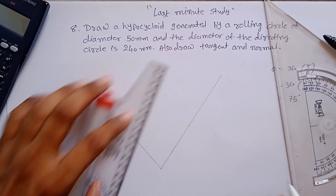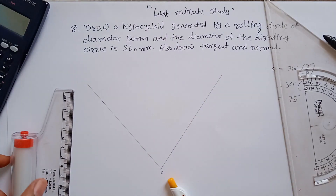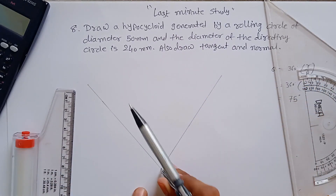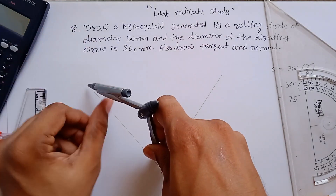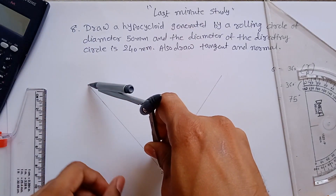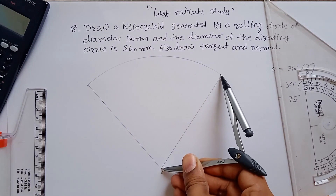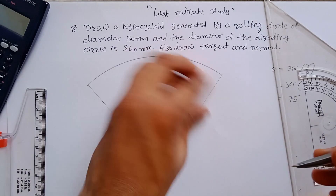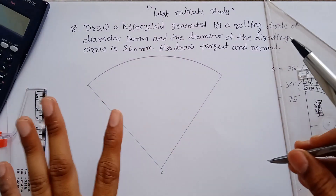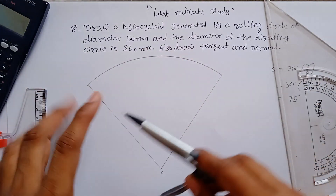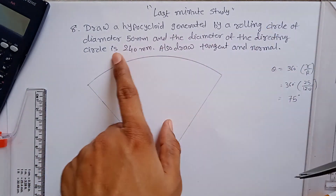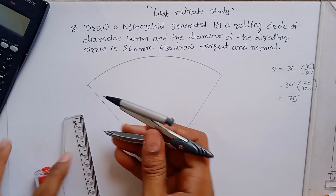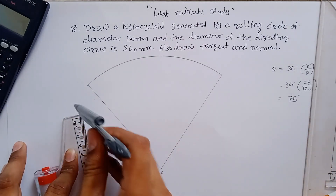This gives you the O point. Using O as center and the endpoint, make an arc — this is your directing circle, on which the rolling circle rolls inside. This is the structure of the directing circle. Now you have to construct a rolling circle with a diameter of 50 mm, so you measure a radius of 25 mm.